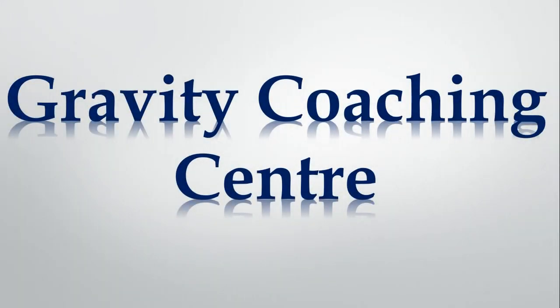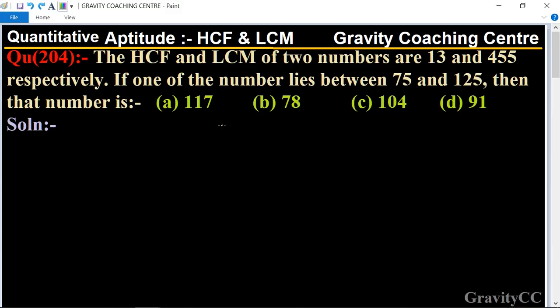Welcome to our channel, Gravity Coaching Center. Quantitative Aptitude, Chapter HCF and LCM, Question Number 204. The HCF and LCM of two numbers are 13 and 455 respectively. If one of the numbers lies between 75 and 125, then that number is what?